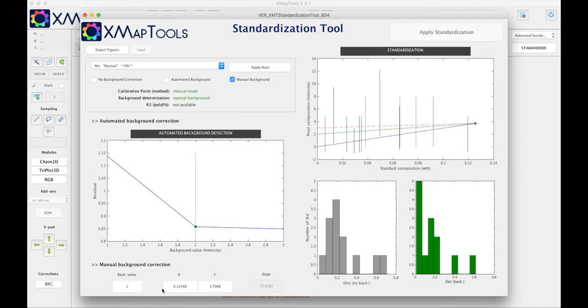Now you can edit either the intercept value or the coordinates of this calibration point. I'm going to change the background value to three in order to get something that is almost horizontal, which means that manganese will be zero in your map.